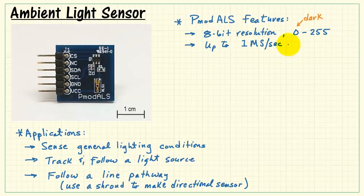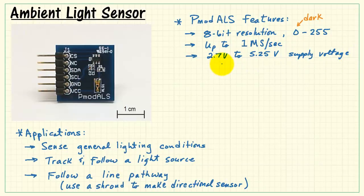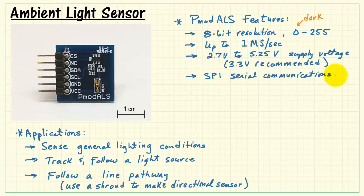You can get up to 1 mega sample per second. You can power the board between 2.7 and 5.25 volts, although 3.3 volts is recommended. And it's based on SPI serial communications anywhere from 25 kilohertz to 20 megahertz. MyRio is 40 hertz to 4 megahertz, just for reference.